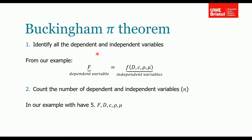Step one: identify the dependent and independent variables. For our example, force is the dependent variable, and it depends on these independent variables: diameter, velocity, density of the fluid, and viscosity of the fluid. Step two: count the number of dependent and independent variables. In our example we have 5 — force, diameter, velocity, density, and viscosity — so n equals 5.